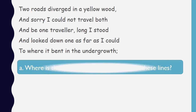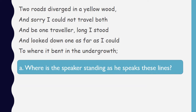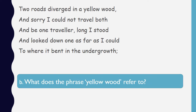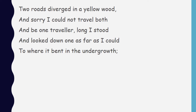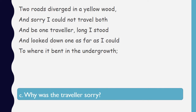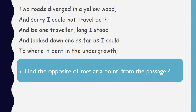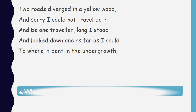Question 1: Where is the speaker standing as he speaks these lines? Question 2: What does the phrase 'yellow wood' refer to? Question 3: Why was the traveller sorry? Question 4: Find the word or phrase that means the opposite of 'met at a point' from the passage. Question 5: Why can't you travel both the roads?